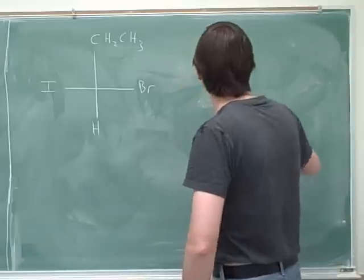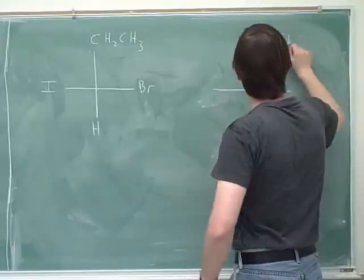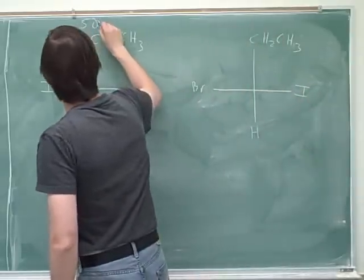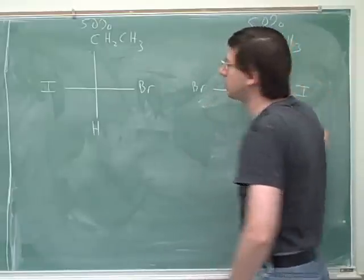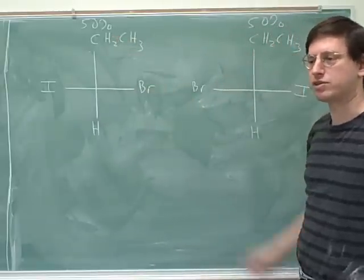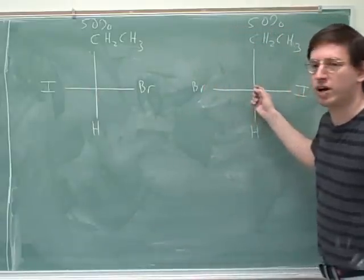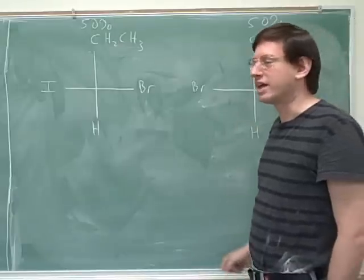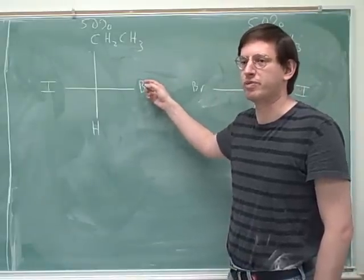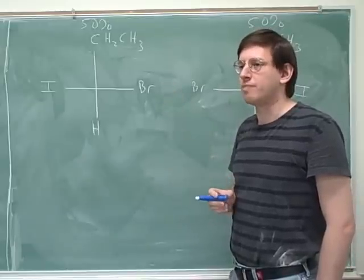Now let's say we have a solution that's 50% this molecule and 50% this molecule. This is a chiral molecule because it has a stereocenter, and this is a chiral molecule because it has a stereocenter. But they cancel each other out because these are enantiomers — they differ by swapping the iodine and the bromine. So even though each molecule is chiral, the solution is optically inactive.